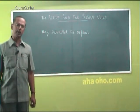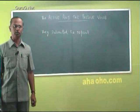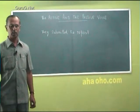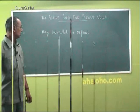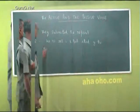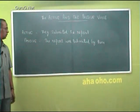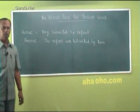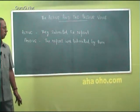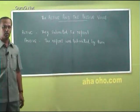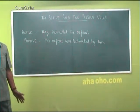A sentence is in the passive voice when its verb form shows that something is done to the subject. For example, 'the report was submitted by them.' In this sentence the verb shows that the sentence is in the passive voice because something is done to the subject.